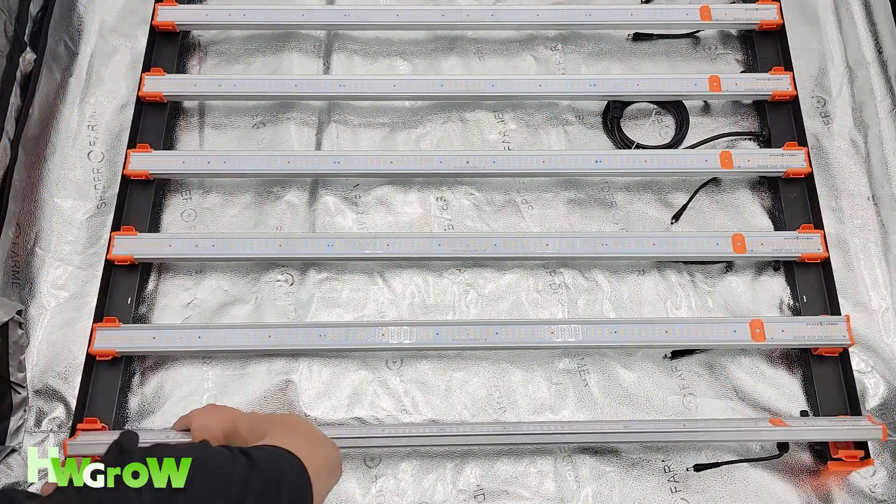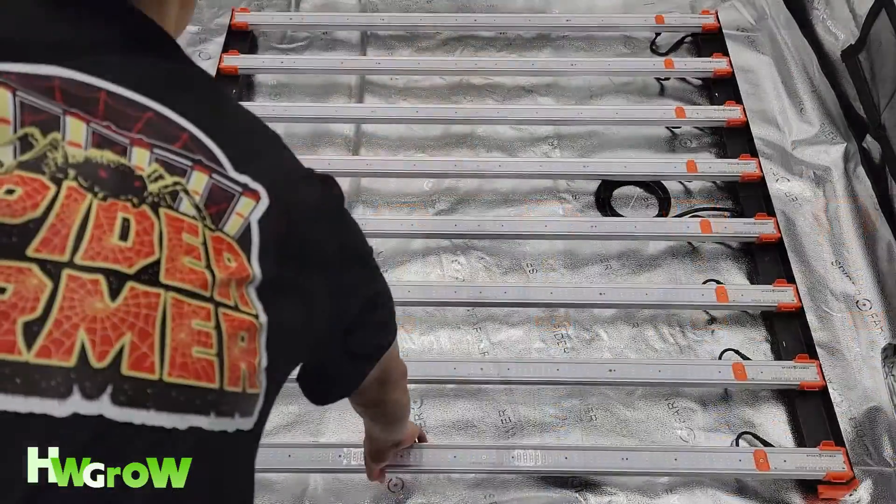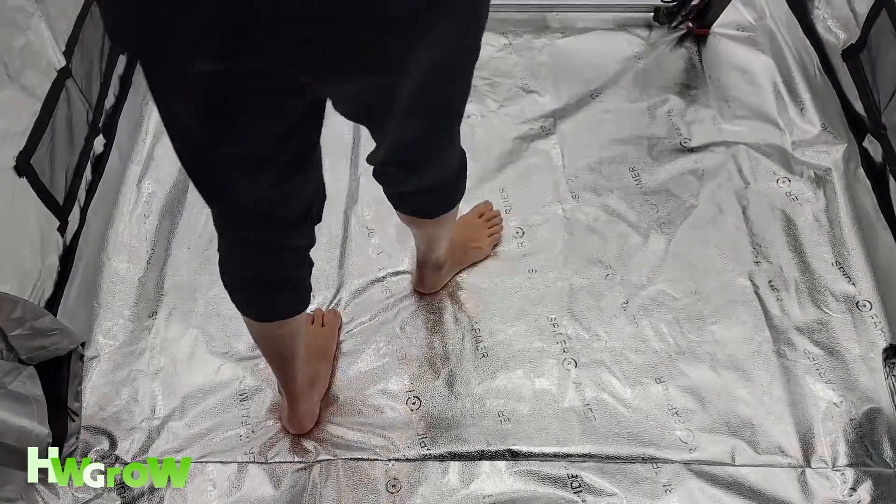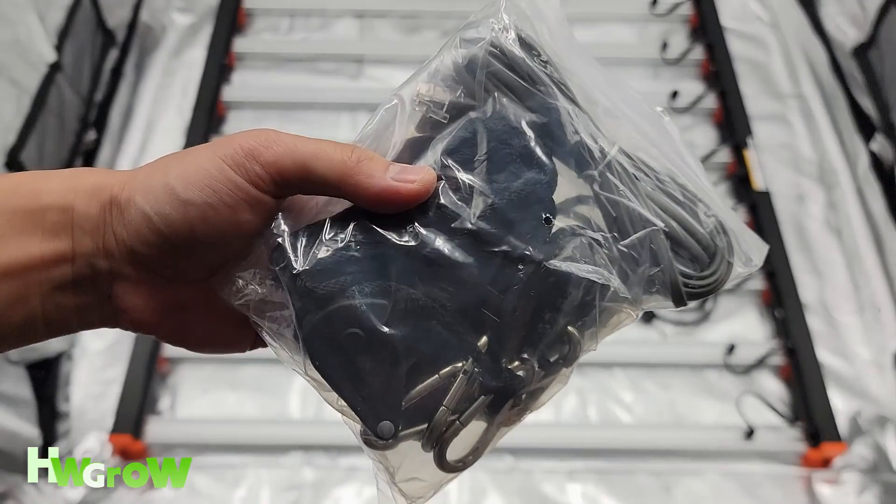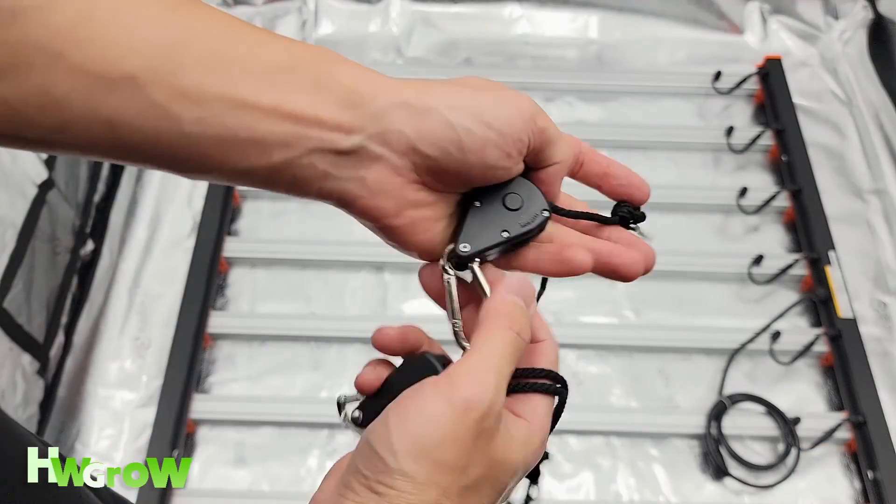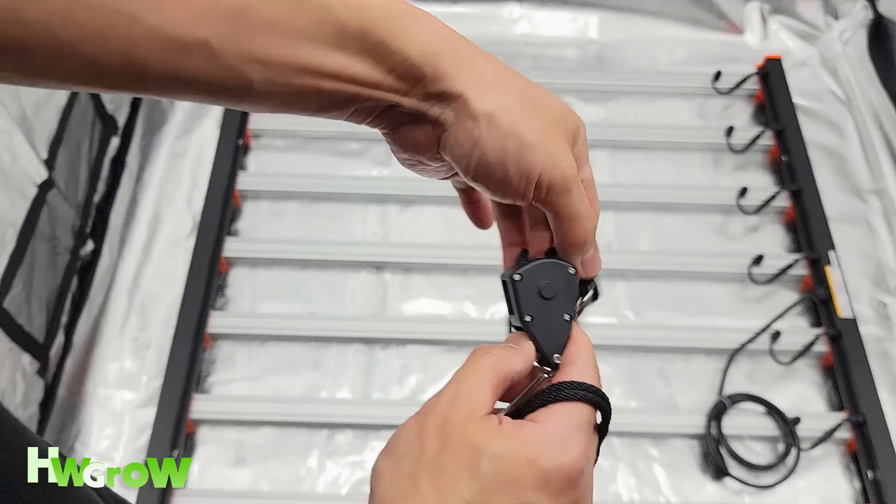Once all of the bars are on and plugged in, flip the light over so the panels are face down, then grab your rope clip hangers. For each of these, you want to pull out about 2 feet of slack.